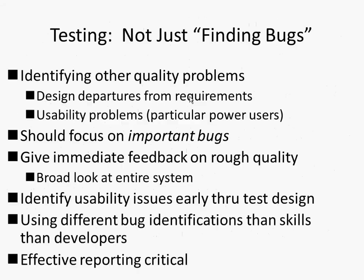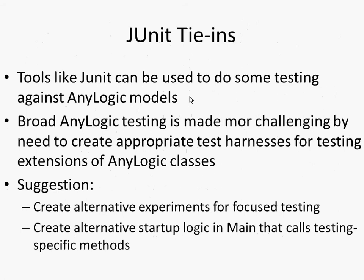Testing. With software quality, testing is not just about finding bugs — it's identifying quality problems. It reflects concern with understandability and comprehensibility of the model, and it's often where we encounter understanding of issues with the model design as well. There's a set of tools to enable testing, and one of the most popular is JUnit — a Java testing framework that can be used to do testing against AnyLogic models. AnyLogic testing is made more challenging because it needs test harnesses.